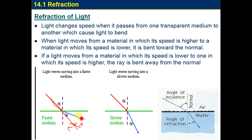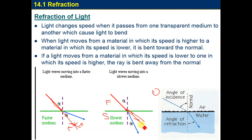It will bend away from the normal, because here the light is going to a faster medium so it speeds up and bends away. So these are the two cases: when light goes from a faster medium to a slower one it bends toward the normal because it slows down; when it goes from a slower medium to a faster one it bends away because it speeds up.